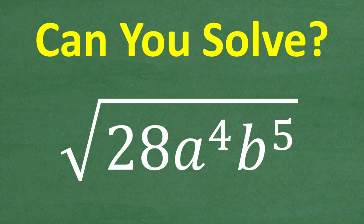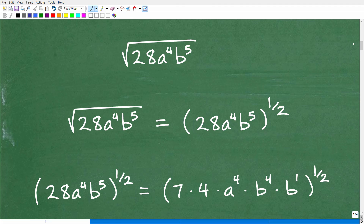If you're at that algebra one level or beyond, you absolutely need to be able to do a problem like this. So let's go ahead and get into how we do this right now. I'm going to approach this in two different ways. Here is our problem: the square root of 28 times a to the fourth times b to the fifth.